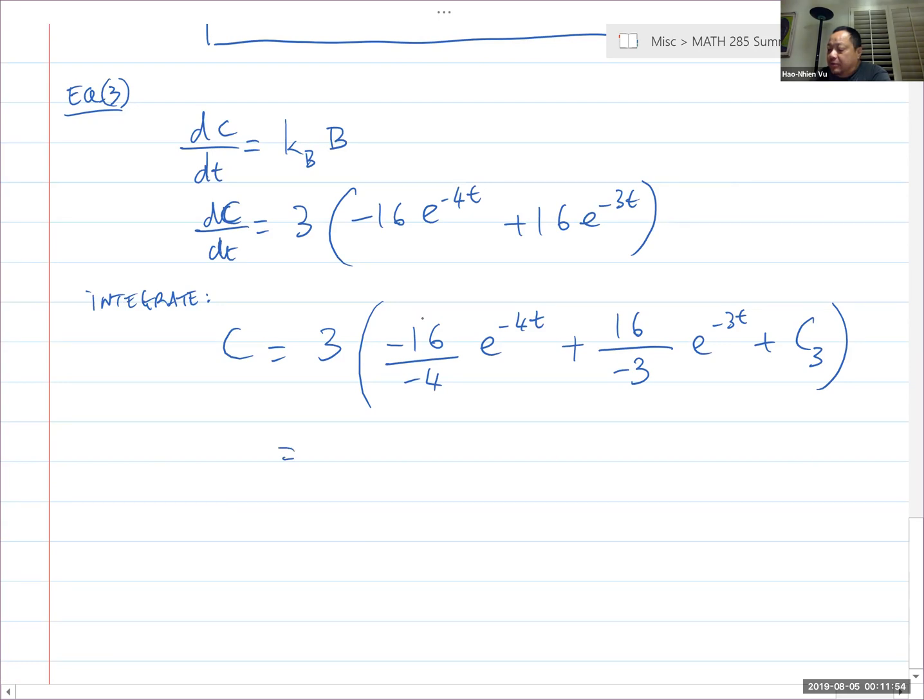Simplify this, I got 12e^(-4t), cancel, cancel, minus 16e^(-3t) plus 3 times C_3, which I'm just going to call C_3.